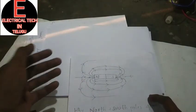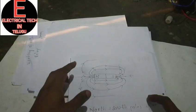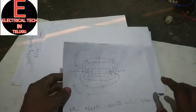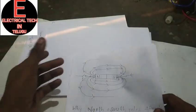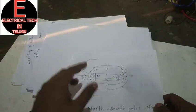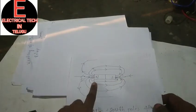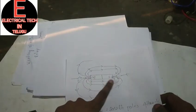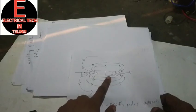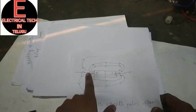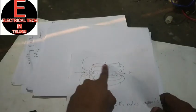Hello friends! This is the magnetic lines of forces. First of all, you can use the bar magnet. This is the bar magnet, and these are the magnetic lines of forces.